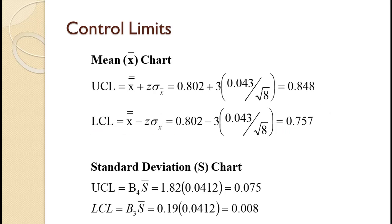For the X-bar chart, the centerline is just the average of the 10 means, or 0.802. To find the upper control limit, we take the grand mean of 0.802 and add 3 times the standard deviation of 0.043 divided by the square root of the sample size to get 0.848. We subtract the same value to get the lower control limit of 0.757.